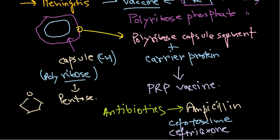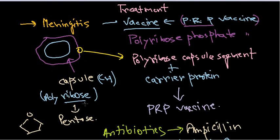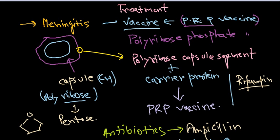Among other antibiotics we can use trimethoprim. For personnel handling the PRP vaccines, we usually treat them with rifampin. These are the different modes of treatment to stop these diseases.